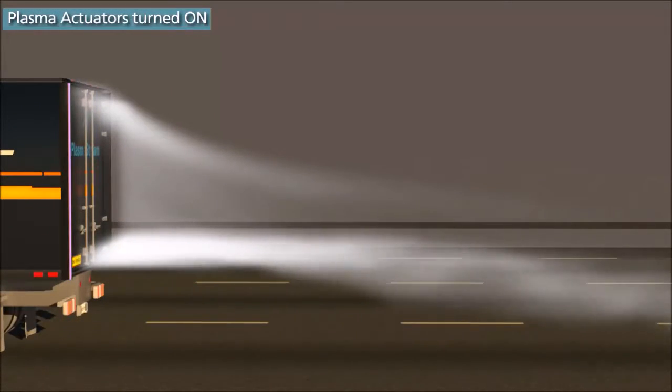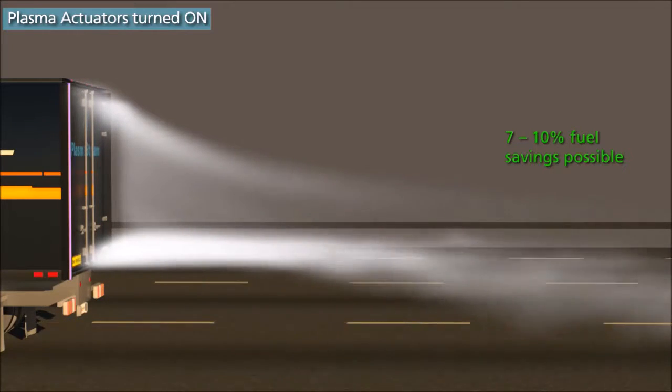Plasma actuators placed on the aft edge of the trailer could lead to a 7-10% reduction in fuel consumption.